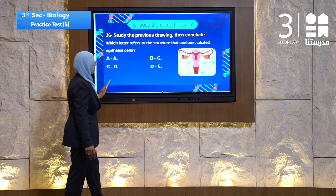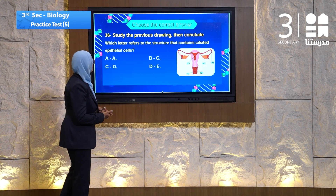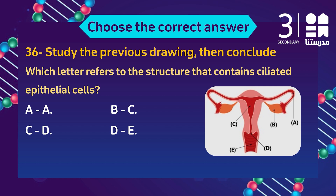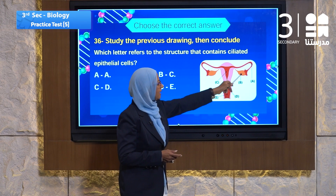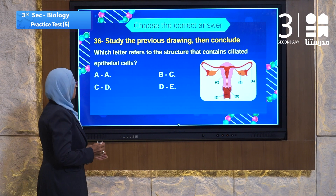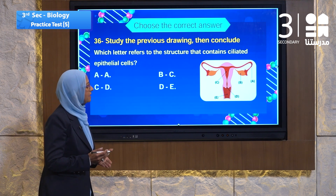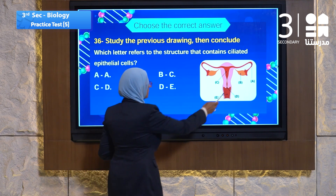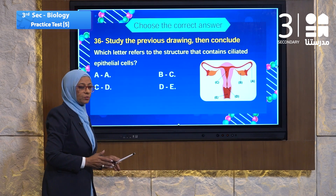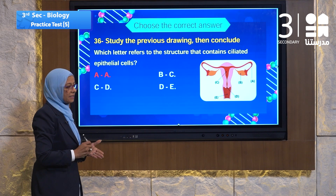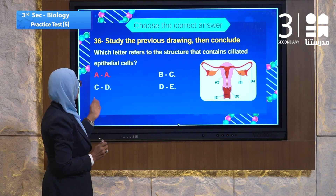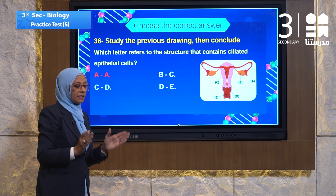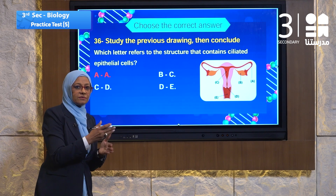Question 36 is about reproduction. Study the drawing and conclude which letter refers to the structure containing ciliated epithelial cells. Looking at the options A, C, D, E — the answer is A, the fallopian tube. A is the structure lined by ciliated epithelial cells, which control the movement of the ovum inside it.